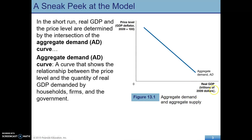Over here we have real GDP. Remember the distinction between nominal GDP and real GDP? Nominal was in current prices and real was in prices of a base year. So real GDP is measured in actual goods and services, accounting for any changes in prices. Aggregate demand shows the relationship between the price level and the quantity of real GDP demanded by households, firms, and the government — we're thinking about an aggregate here.